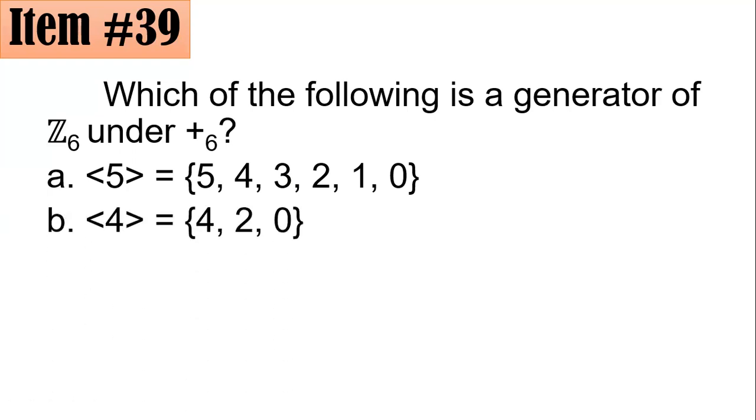How about B? For 4, 4 plus 4, that's 8. 8 divided by 6 gives a remainder of 2. 2 plus 4 is 6. Divided by 6 gives a remainder of 0. So you stop here. 4 could only generate 3 terms: 4, 2, and 0. Nothing else. If you have the element 3, 3 plus 3 gives you 6. But 6 divided by 6 gives a remainder of 0. So you stop there.